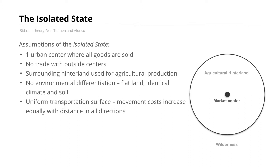Von Thunen was interested in the primary activities of agriculture on his estate. The approach he takes — one we'll see often in location theories — is to create an ideal situation with simplifying assumptions. The isolated state is conceived as one urban center, basically just a market in the middle of an agricultural hinterland, where all goods are sold and there is no trade with outside centers. The surrounding hinterland is used for agricultural production with no environmental differentiation — just flatland with identical climate and soil.